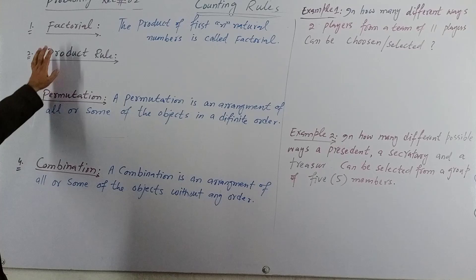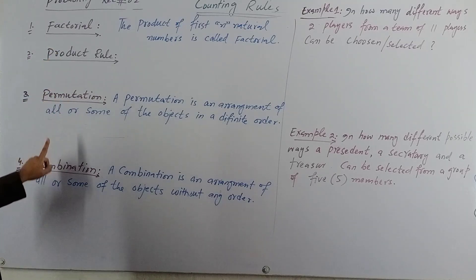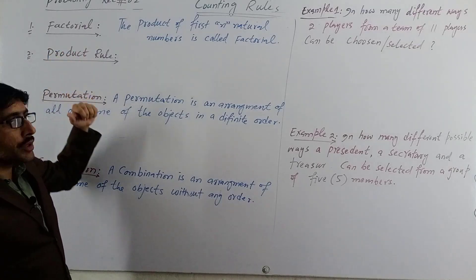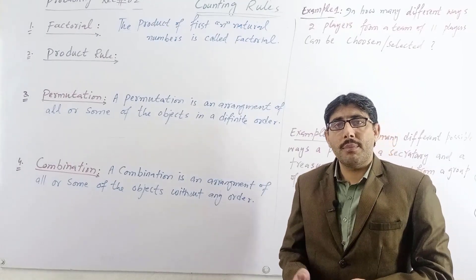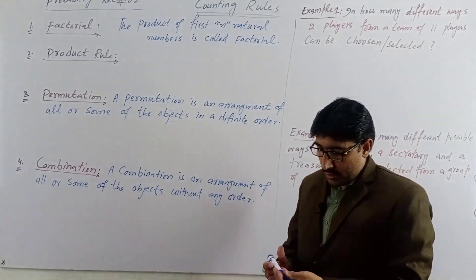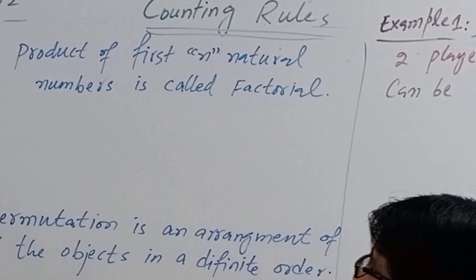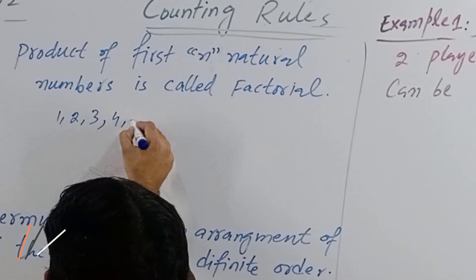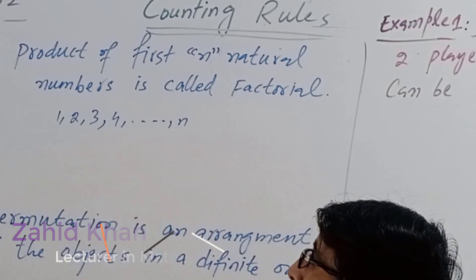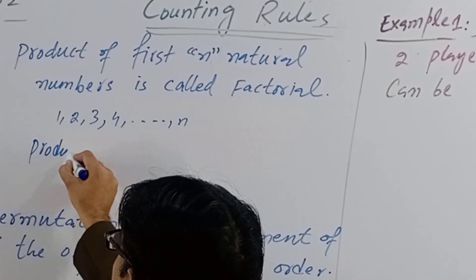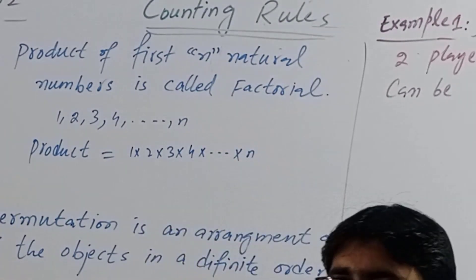What is factorial? Factorial is the product of the first n natural numbers. For the first n natural numbers — one, two, three, four, up to n — we take their product. This is equal to one multiply two multiply three multiply four multiply up to n.